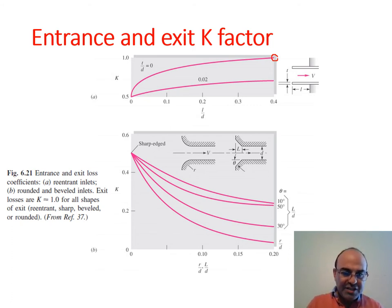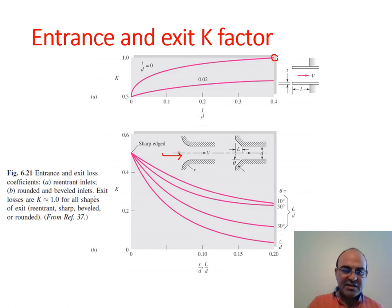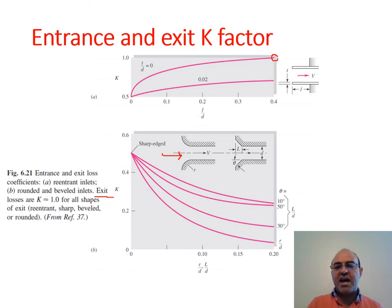In part (b), rounded and beveled inlets are shown. The flow goes left to right, and K can be estimated as a function of r/D, L/D, and the bevel angle theta. For exit losses, K ≈ 1 for all shapes of exit — because the velocity head is essentially lost at the exit and cannot be recovered.